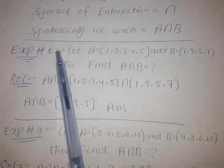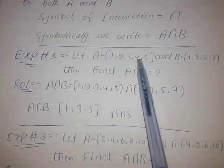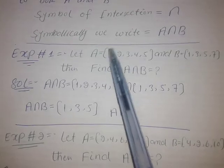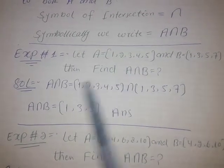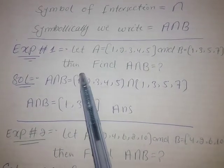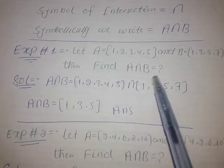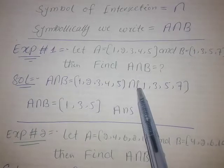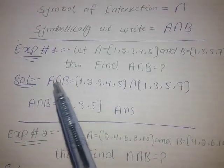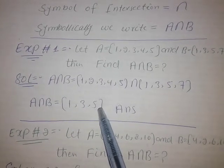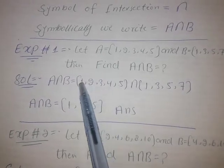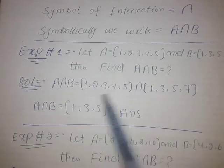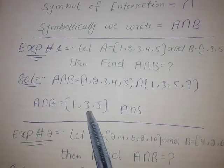For example, let A be equal to {1, 2, 3, 4, 5} and B be equal to {1, 3, 5, 7}. Find A intersection B. We look for the common elements of both sets. The common elements are 1, 3, and 5. So A intersection B is equal to {1, 3, 5}.